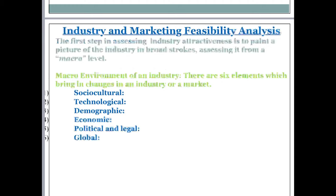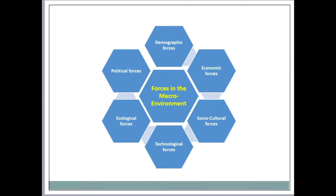The six macro-environment elements are: sociocultural, technological, demographic, economic, political and legal, and global. You can see in this picture that the forces in macro analysis are distributed on all six sides of a hexagon.